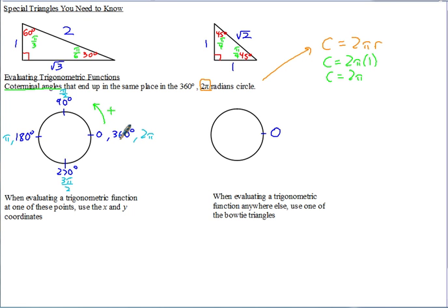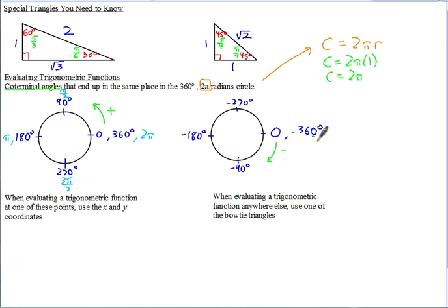You can also go in the negative direction — clockwise — starting at zero. In degrees: negative 90, negative 180, negative 270, and negative 360 going all the way around. In radians, this would be negative pi over 2, negative pi, negative 3 pi over 2, and negative 2 pi.